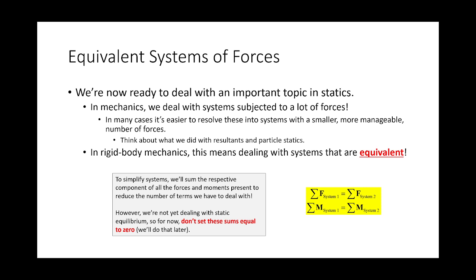Later, we'll say that if we treat these rigid body systems as static, then both the sum of forces and the sum of moments must equal zero — and we ask what external forces are required to keep the system in equilibrium; we call those reactions. Right now we're just saying the two systems are equivalent. Don't yet set these sums equal to zero; we will do that later. The idea is to take our systems and simplify them.